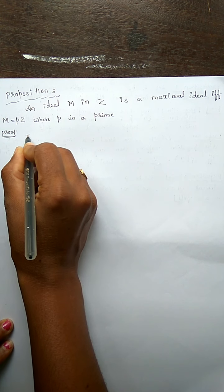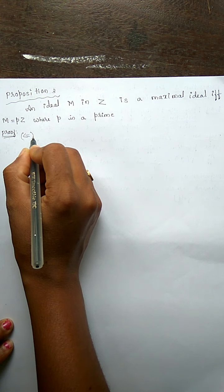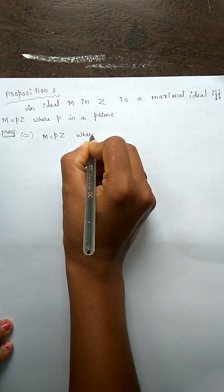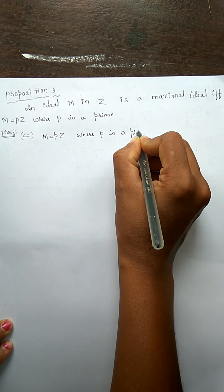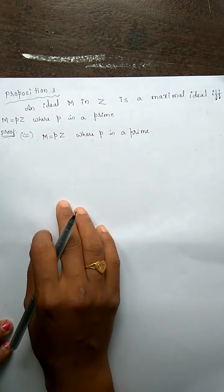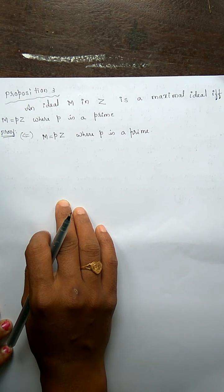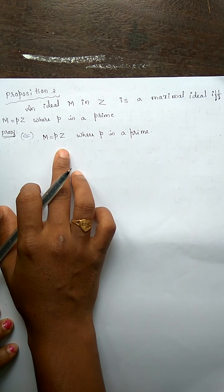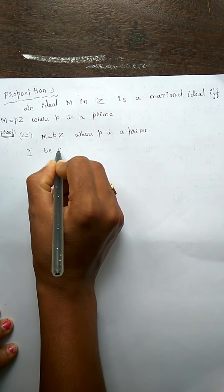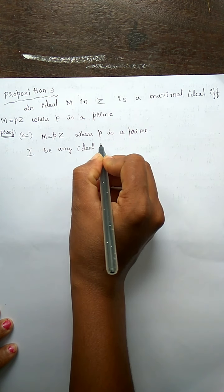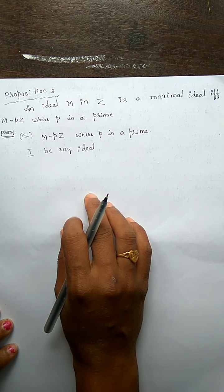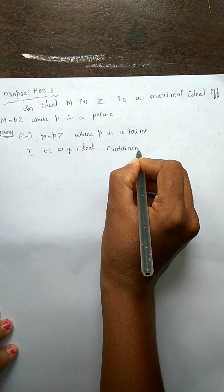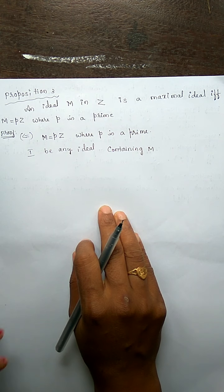First we shall prove the converse part. We assume M is equal to pZ where p is a prime. We have to show that M is a maximal ideal of Z. For that, let I be any ideal of Z containing M.